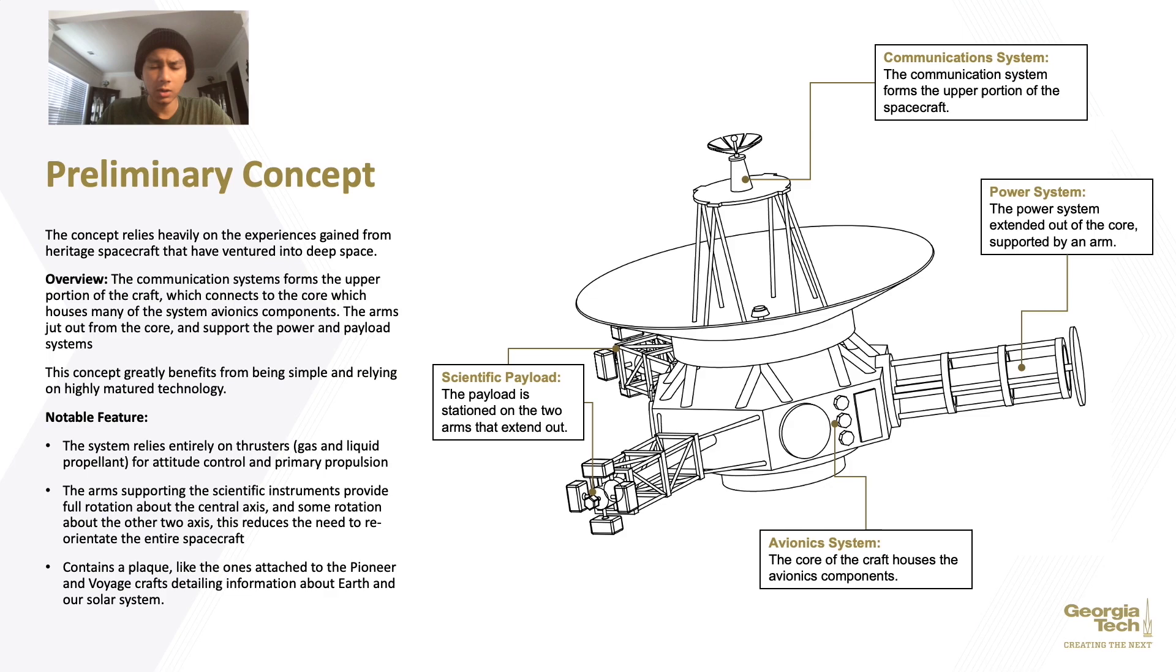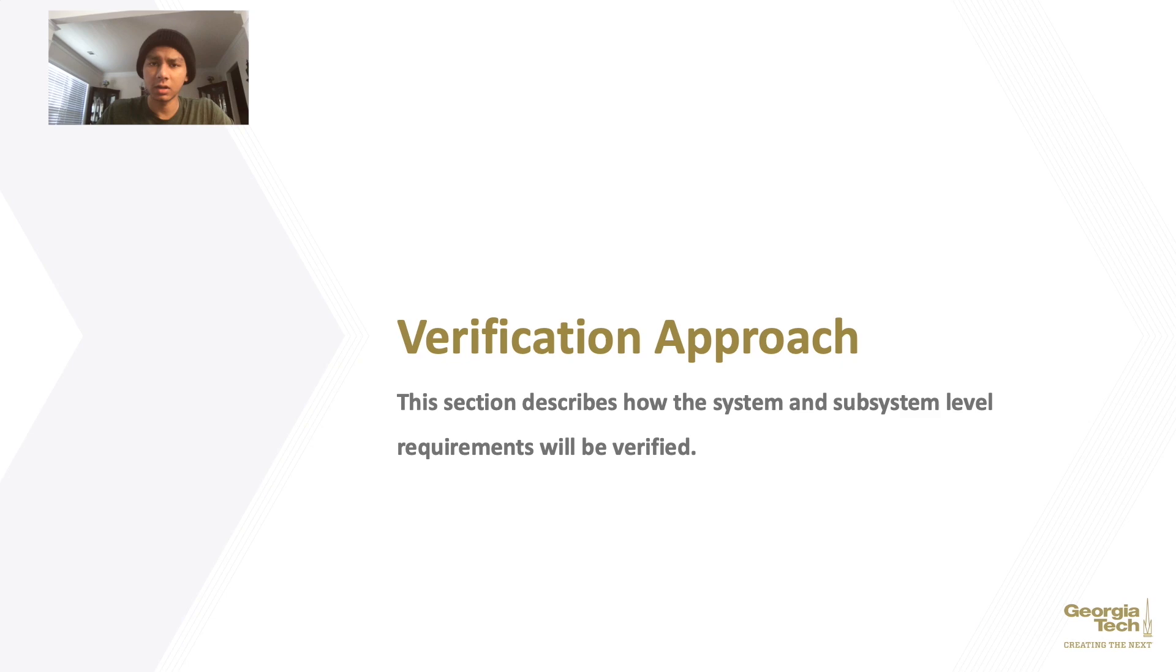We felt that this was a minor drawback with the New Horizons space probe as the instruments on that probe are mounted to the main body. So, orienting them to a particular point requires orienting the entire body. We believe this helps to reduce that need somewhat. So, overall, we think this design greatly benefits from being simple and from relying on technology that's been highly matured. As a result, it effectively lowers our risks and our costs and ultimately improves mission success.